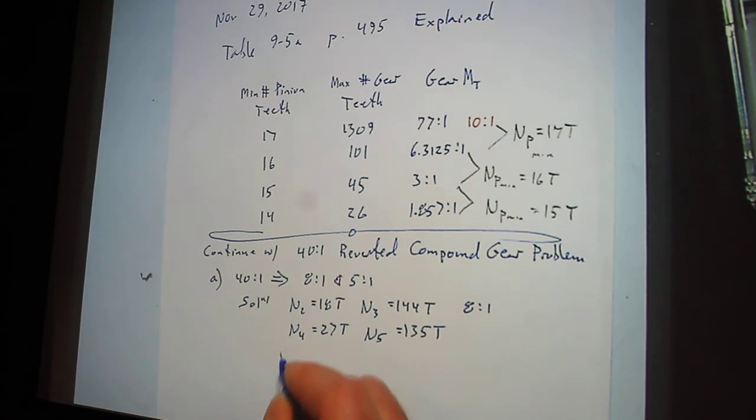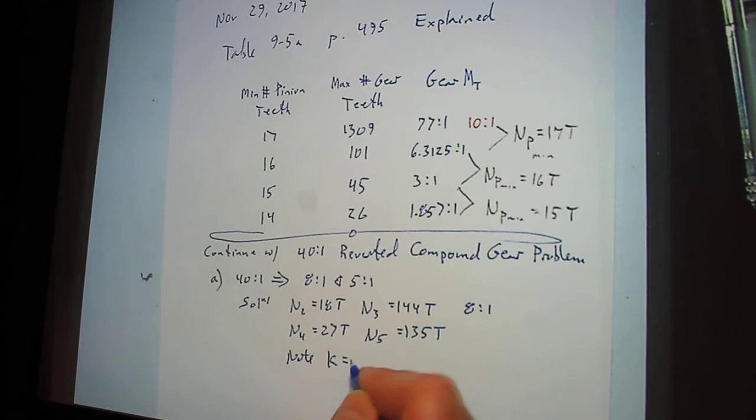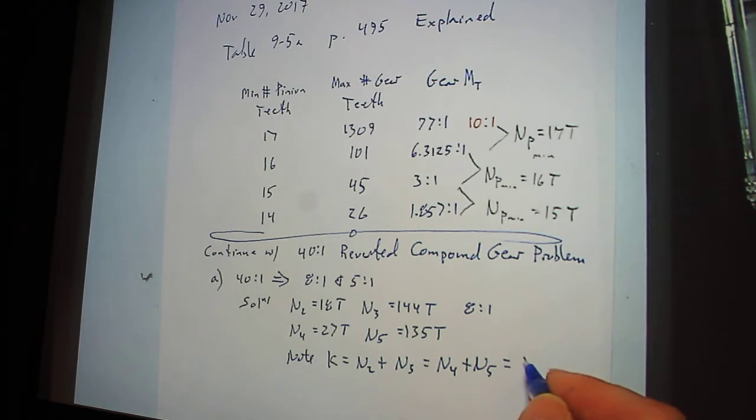And note that K equals N2 plus N3, which equals N4 plus N5, which equals 162.